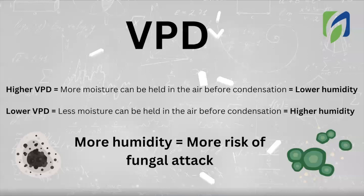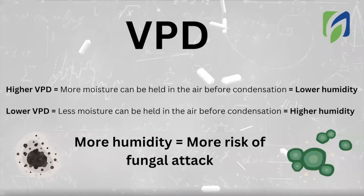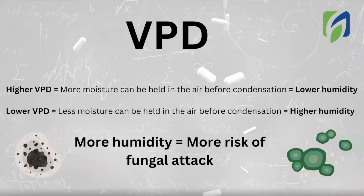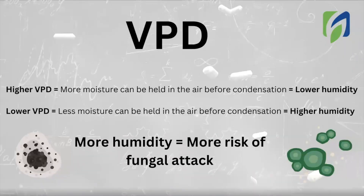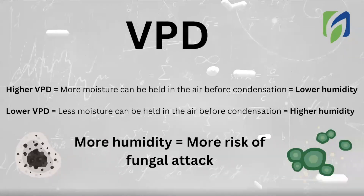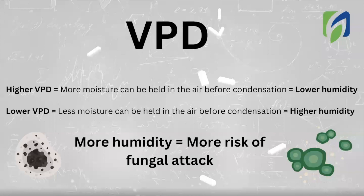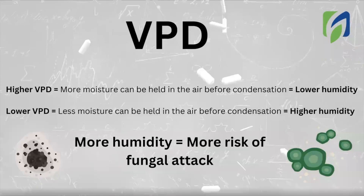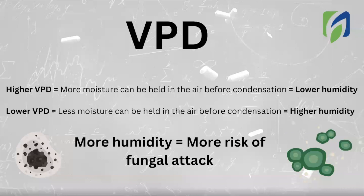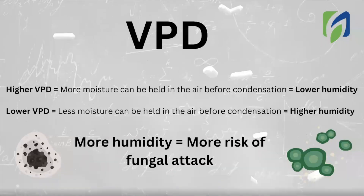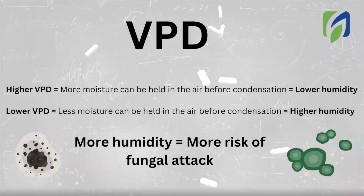The easy way to explain VPD is by knowing its relation with relative humidity. Higher VPD means more moisture can be added to the ambient, meaning relative humidity is low. On the other hand, low VPD means less moisture can be held in air before reaching saturation, meaning a condition with high relative humidity.